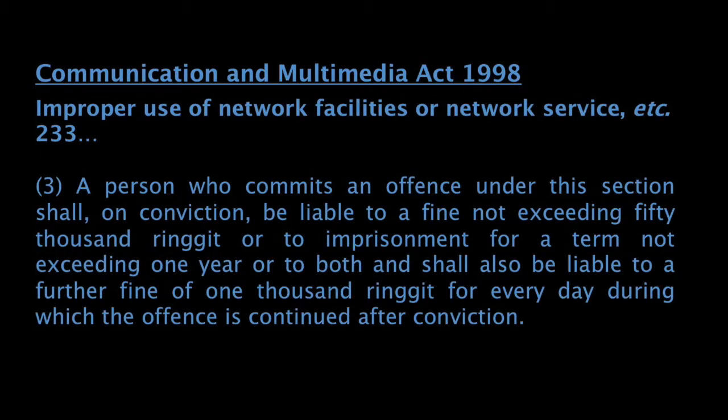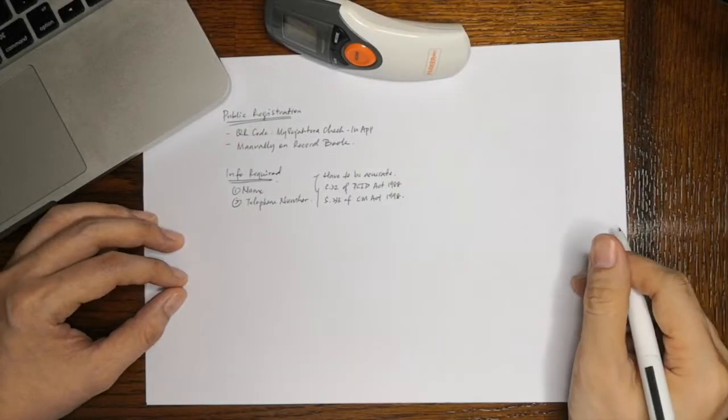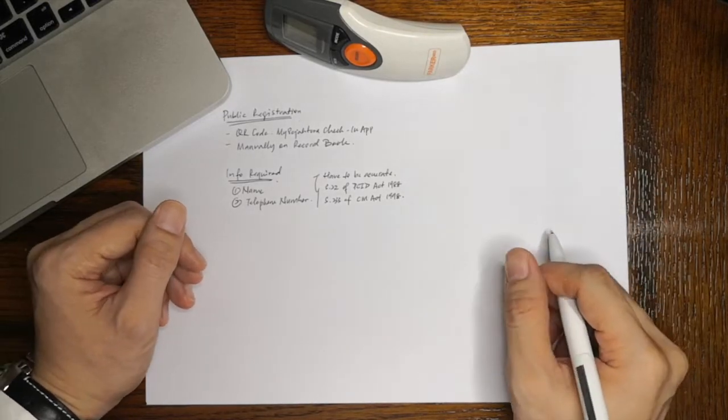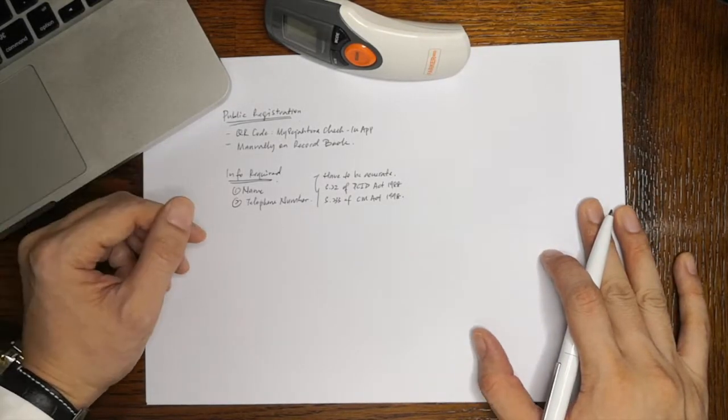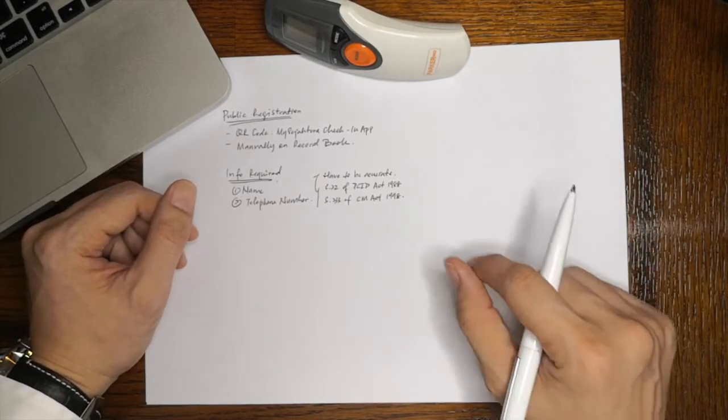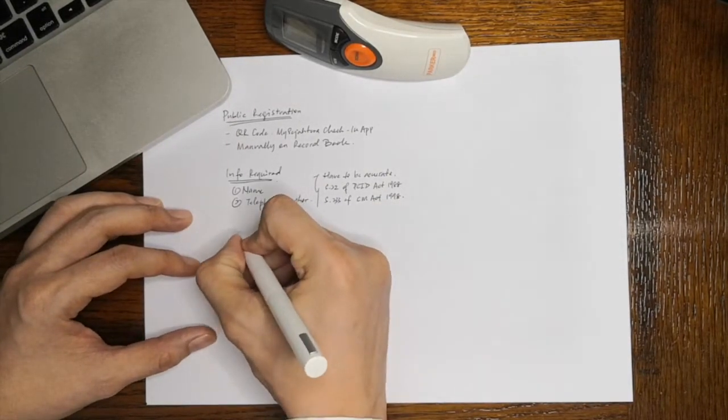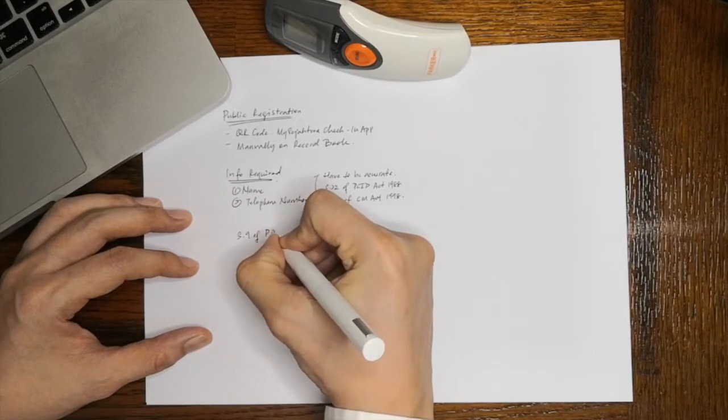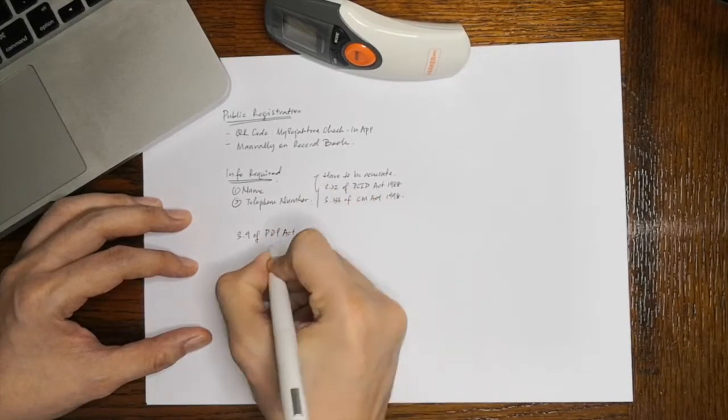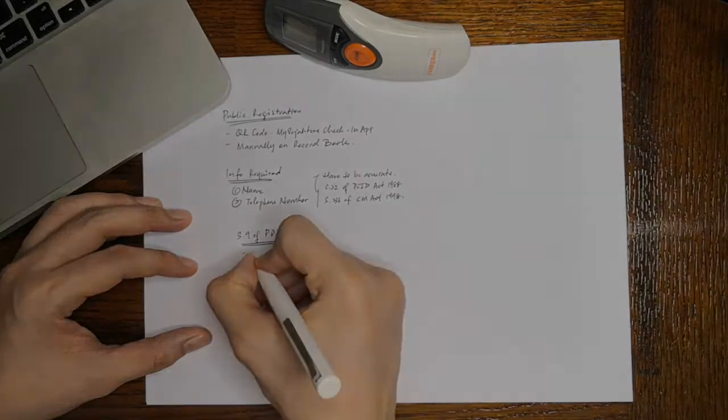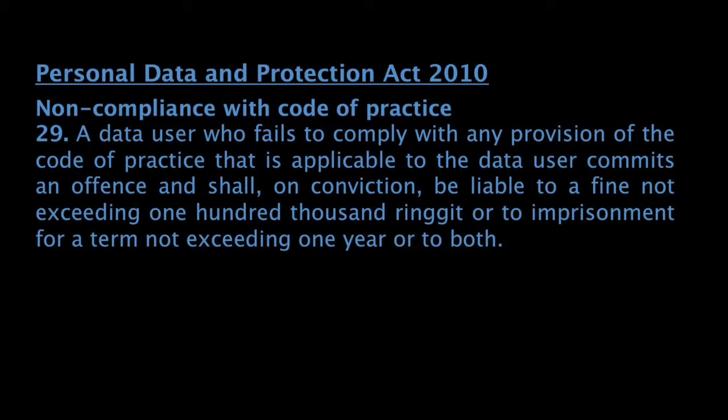It is therefore crucial for business owners and its employees to be vigilant when taking down details of the public. Section 9 of the Personal Data and Protection Act 2010 imposes a duty on companies to protect your data from being misused or disclosed without authorization. Anyone found in breach of this commits an offence and shall, on conviction, be liable to a fine not exceeding RM100,000, or to imprisonment for a term not exceeding one year, or both.